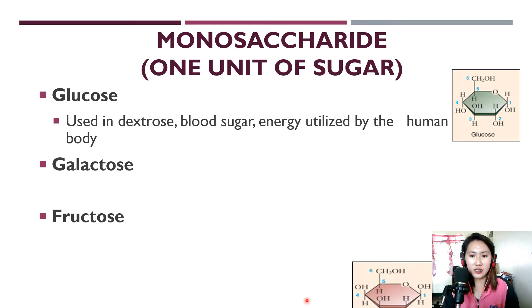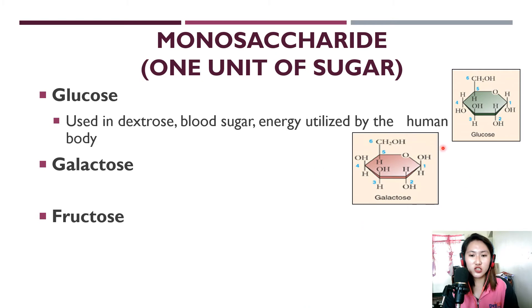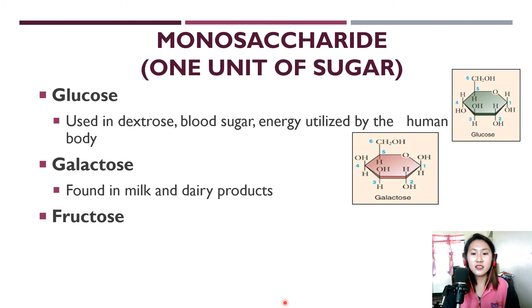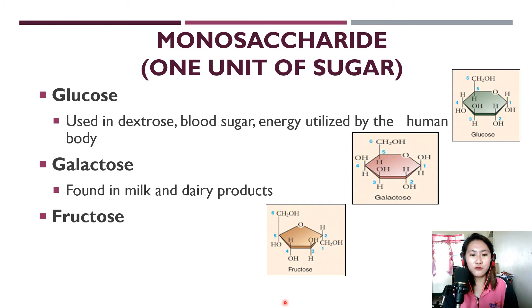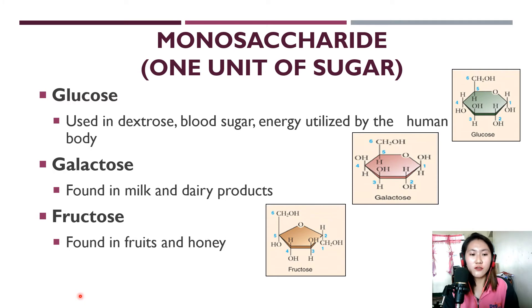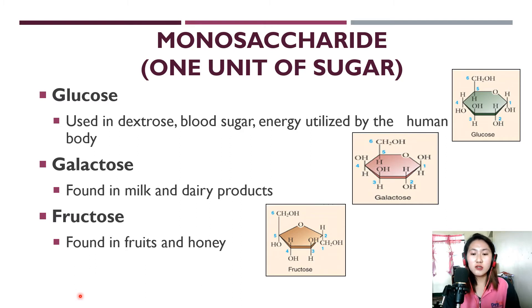Next we have galactose. Here is the structure of galactose. Galactose is found in milk and dairy products — it is the sugar used in our milk and any dairy product. Next we have fructose. Here is the structure of fructose. As the word itself suggests, fructose is found in fruits and honey — it is responsible for the sweetness of fruits.